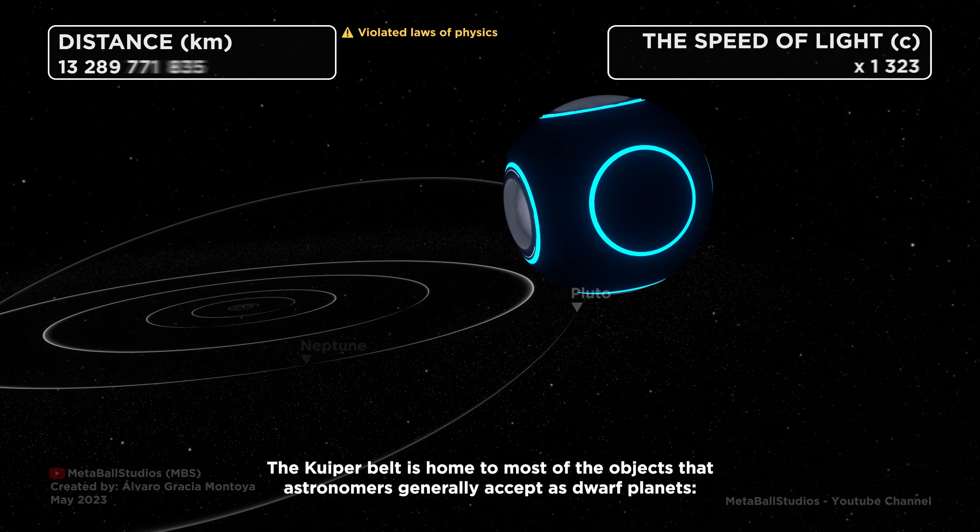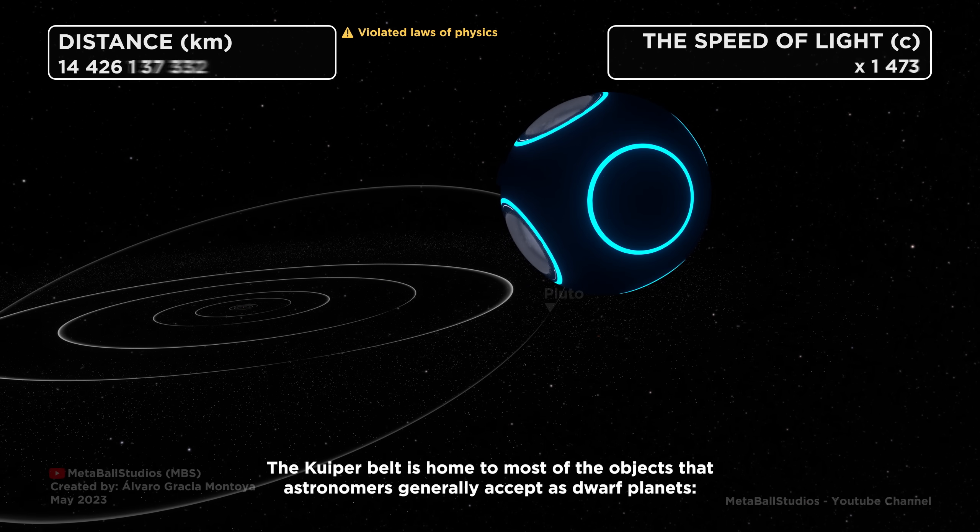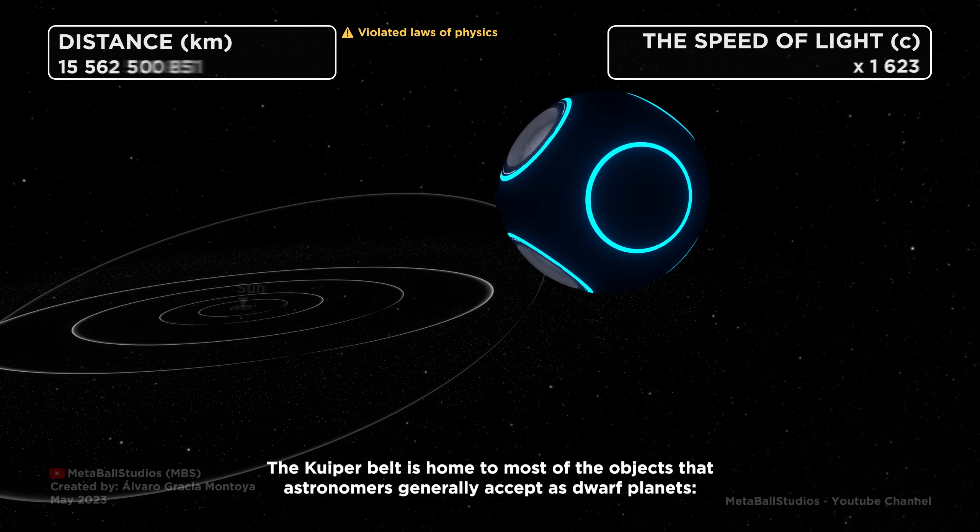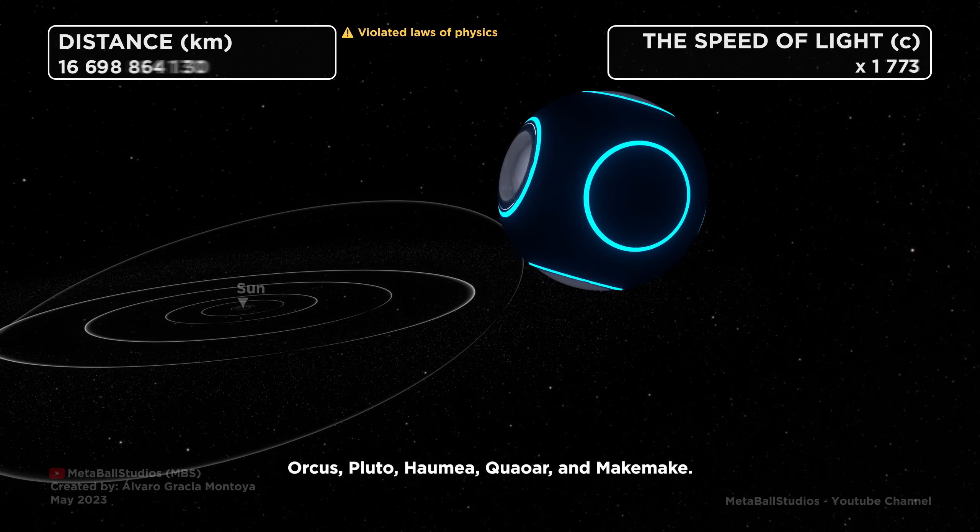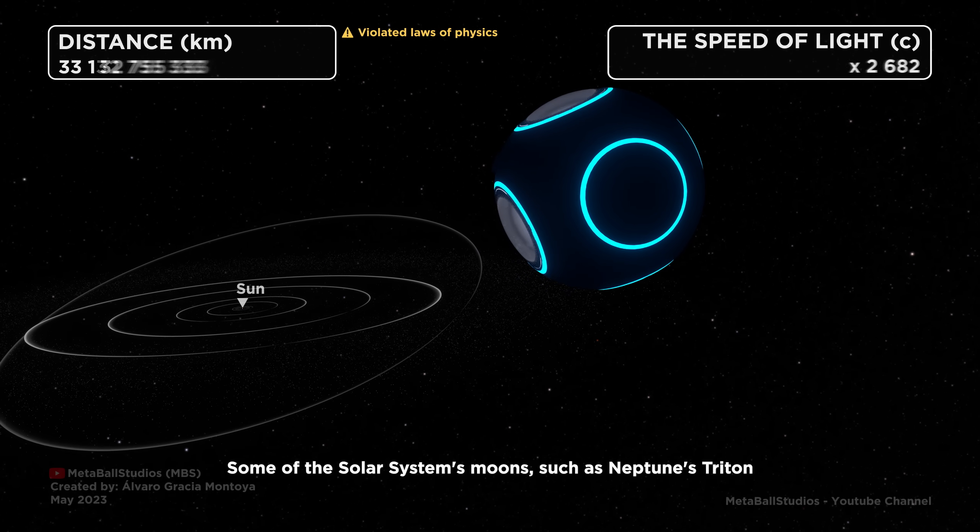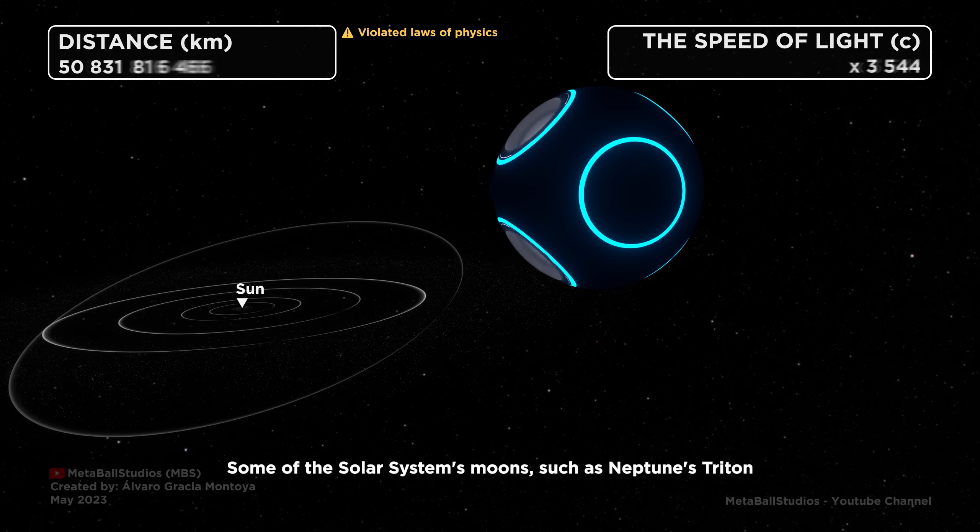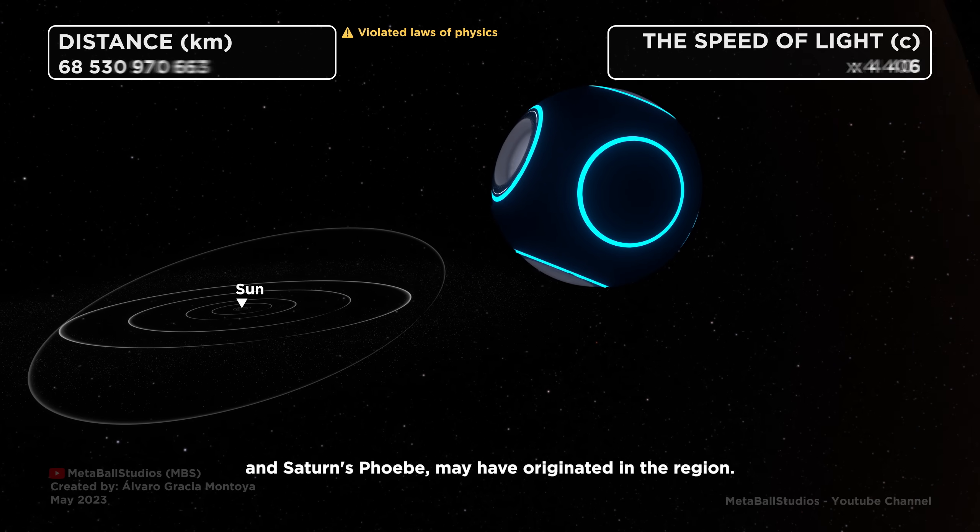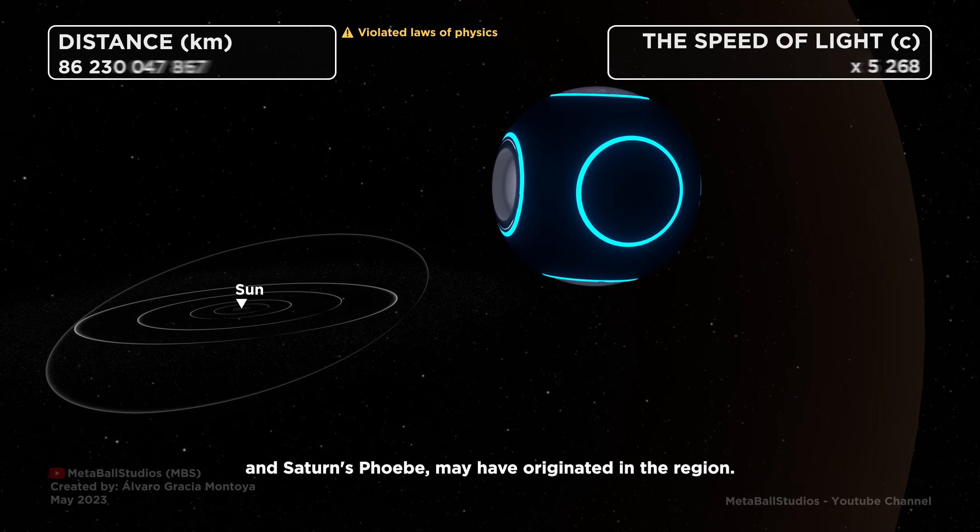The Kuiper Belt is home to most of the objects that astronomers generally accept as dwarf planets: Orcus, Pluto, Haumea, Quaoar, and Makemake. Some of the solar system's moons, such as Neptune's Triton and Saturn's Phoebe, may have originated in the region.